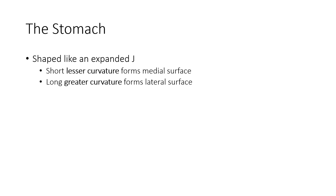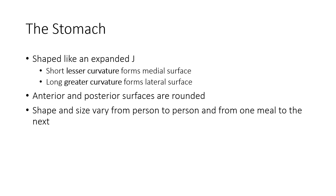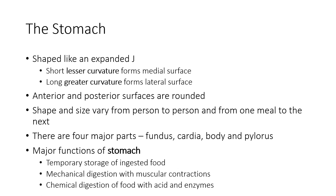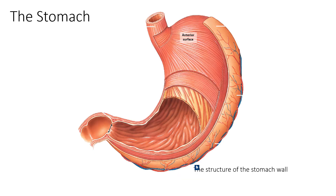The stomach is shaped like an expanded J. Its short lesser curvature forms the medial surface and the long greater curvature forms the lateral surface. The anterior and posterior surfaces are rounded. Shape and size vary from person to person and from one meal to the next. There are four major parts: fundus, cardia, body and pylorus. The major functions of the stomach include temporary storage of ingested food, mechanical digestion with muscular contractions, and chemical digestion of food with acid and enzymes.